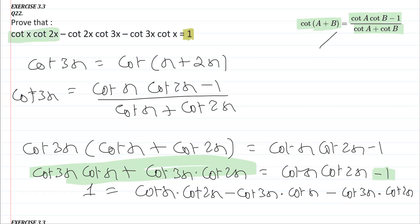And you can see that this is exactly what we need to prove. The right hand side is cot x into cot 2x minus cot 2x into cot 3x minus cot 3x into cot x, which matches the original expression. Hence proved.